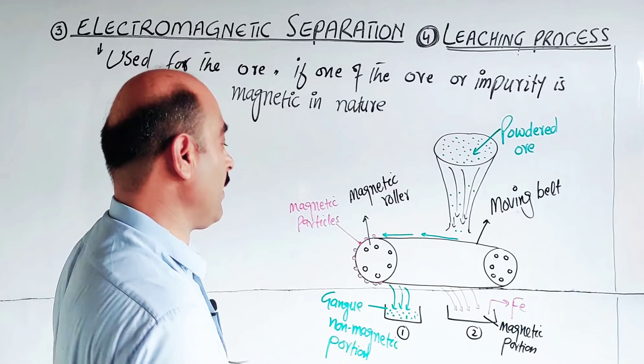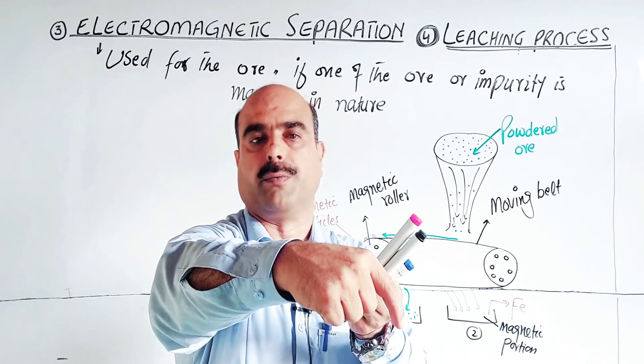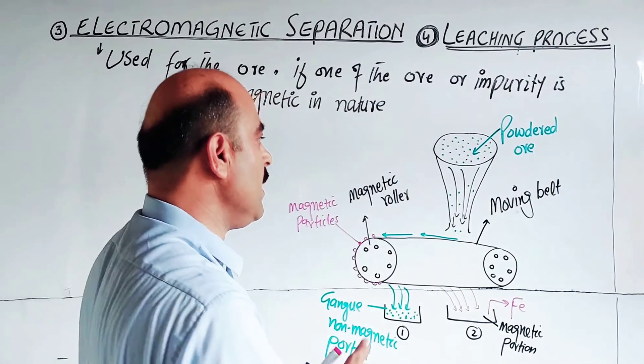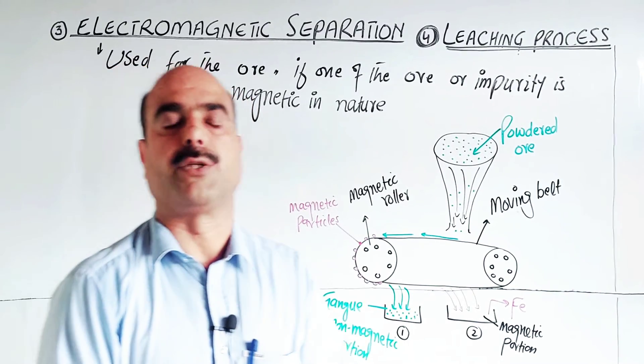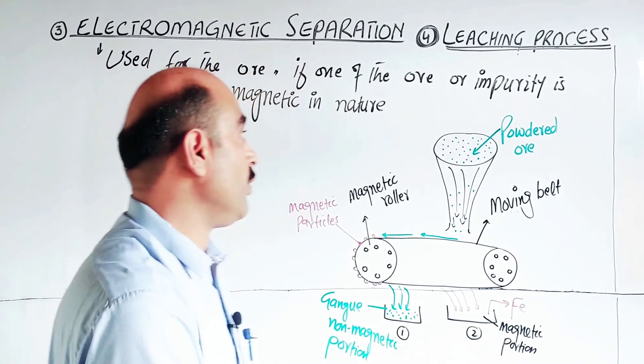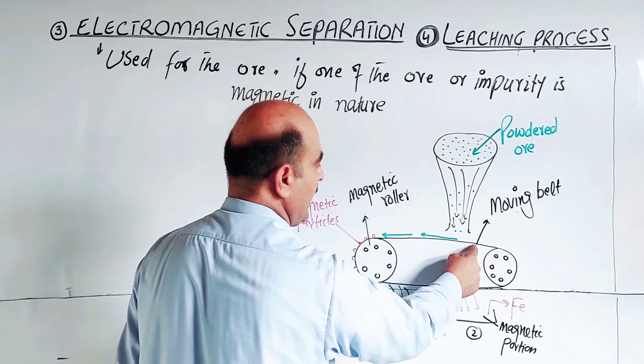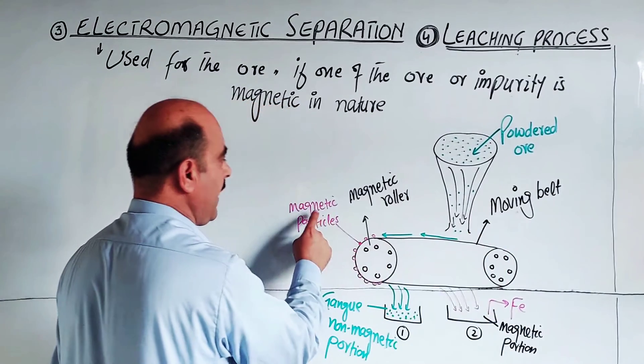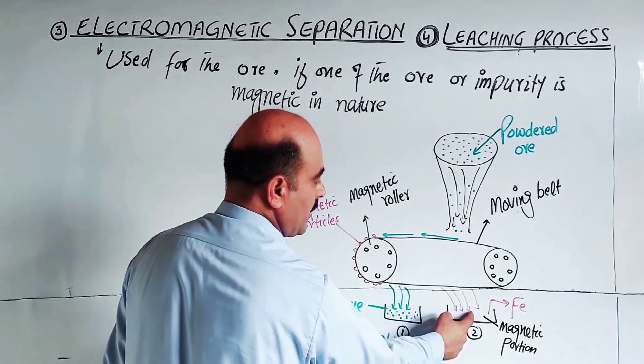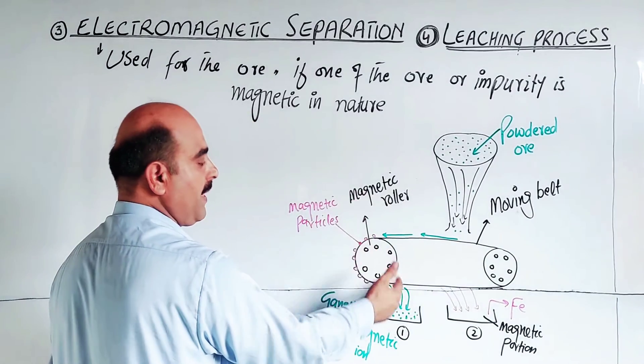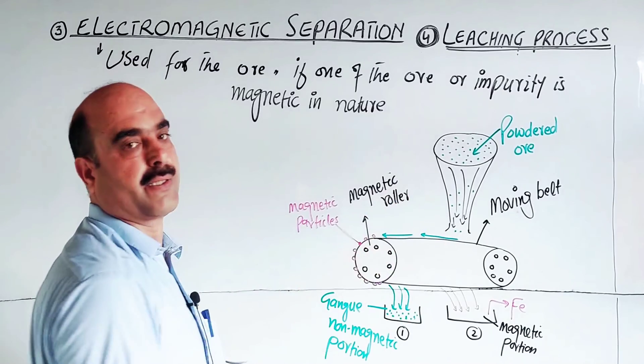In container number one, we have non-magnetic particles. In container number two, we have magnetic particles that stuck to the magnetic roller and were carried over. Now we have two different parts - our ore is separated. This is a simple method of ore concentration and dressing when the impurity or ore particles are magnetic in nature. Using the power of magnetic ruler and moving belt, we separate iron magnetic particles from non-magnetic portions into different containers.